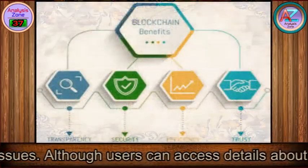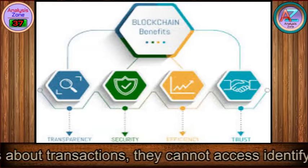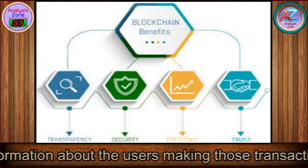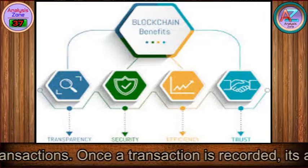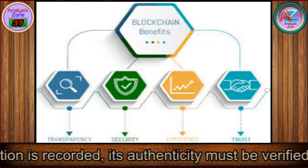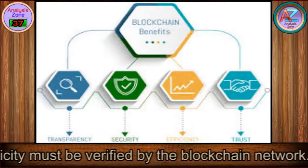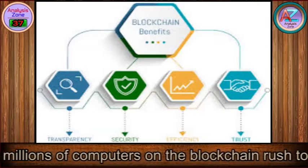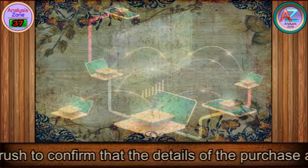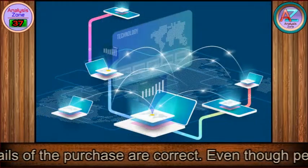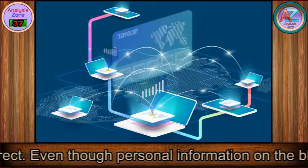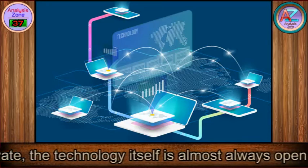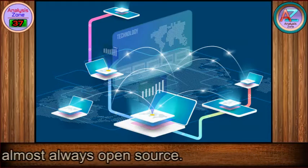Although users can access details about transactions, they cannot access identifying information about the users making those transactions. Once a transaction is recorded, its authenticity must be verified by the blockchain network — thousands or even millions of computers rush to confirm that the details of the purchase are correct. Even though personal information on the blockchain is kept private, the technology itself is almost always open source.